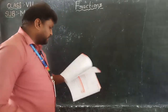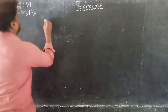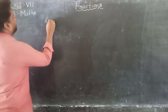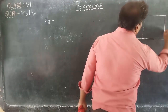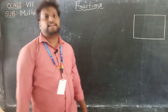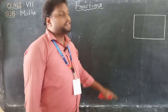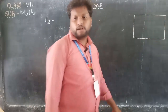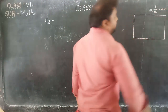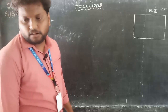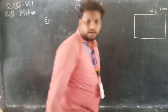We have a rectangular sheet of paper that is 12 and 1/2 cm long and 10 and 2/3 cm wide. Here is one rectangular paper. A rectangle has length and breadth — two different sides — where opposite sides are equal: lengths are equal and breadths are equal. Length is given as 12 and 1/2 cm, and the width is 10 and 2/3 cm.